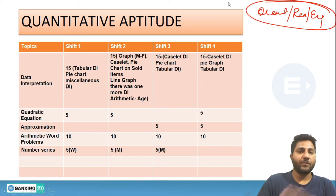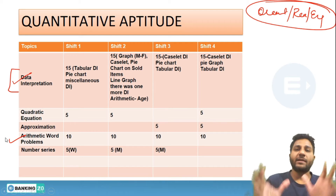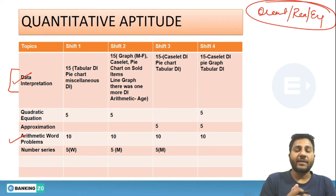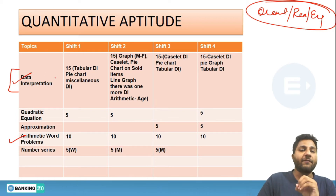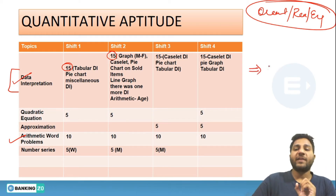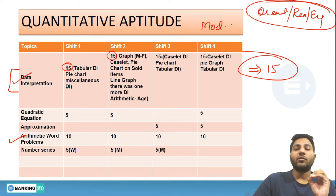As we have seen in the 3rd October shift, they were focused on DI and arithmetic problems, so in this examination it is predictable because they have already done the same thing. They have continuously asked 15 questions on DI — whether we are talking about shift 1, 2, 3, or 4, all the shifts are on the same page. However, today's examination was a bit moderate to difficult level.